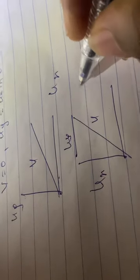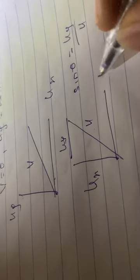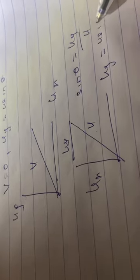When we have u, this component here is u_y and here is u_x. Sine theta becomes u_y over u, so u_y will be equal to u sine theta.